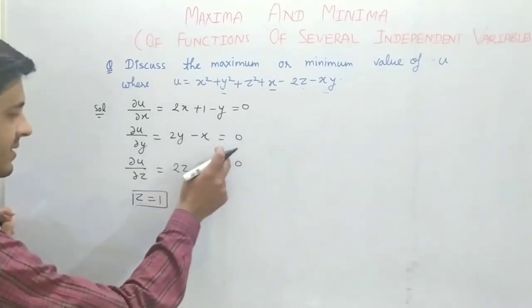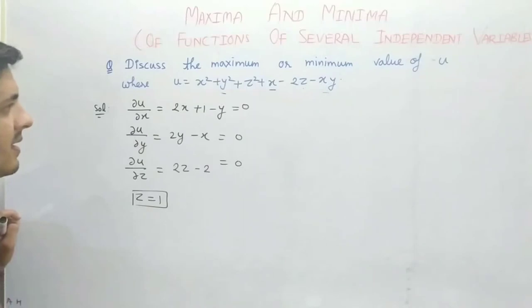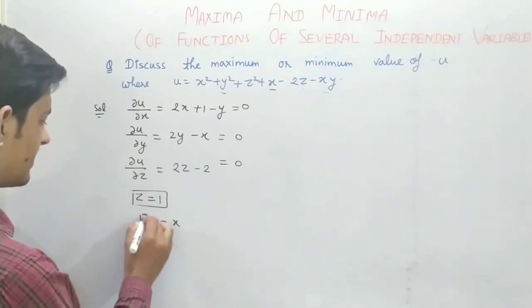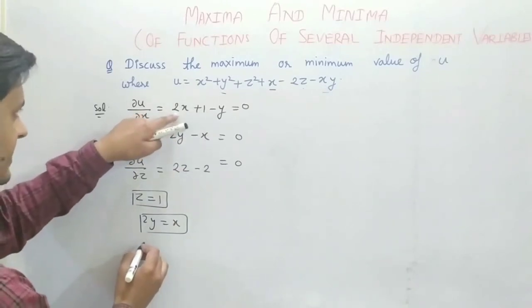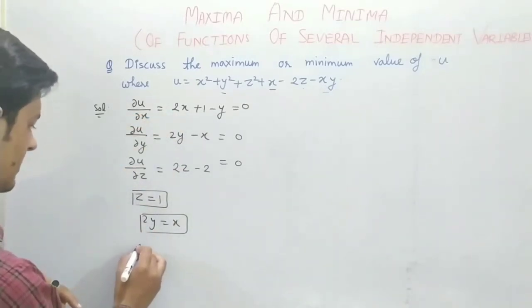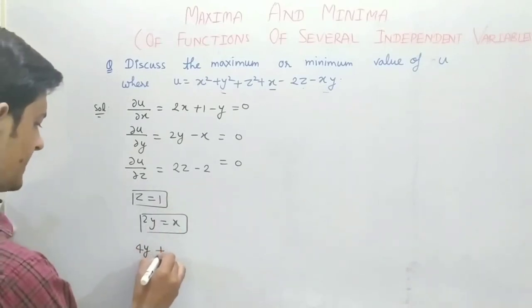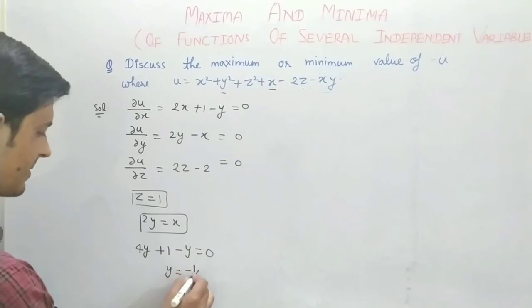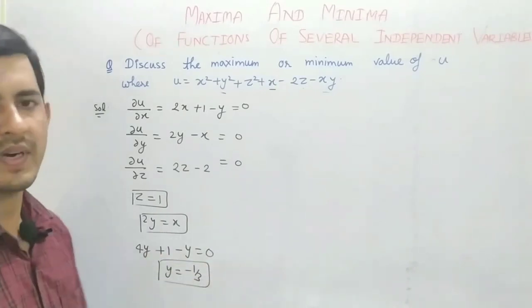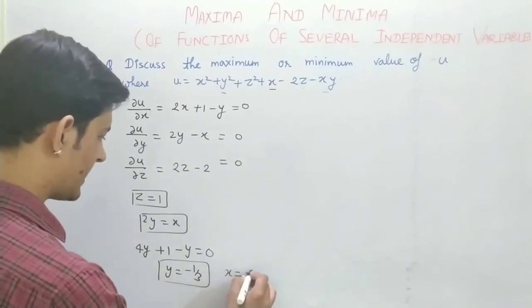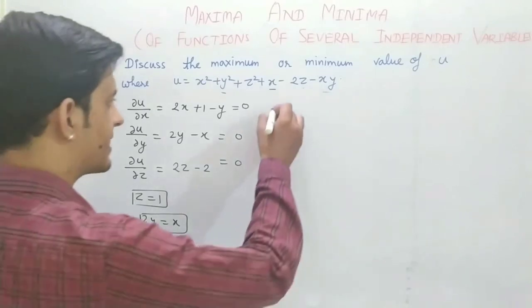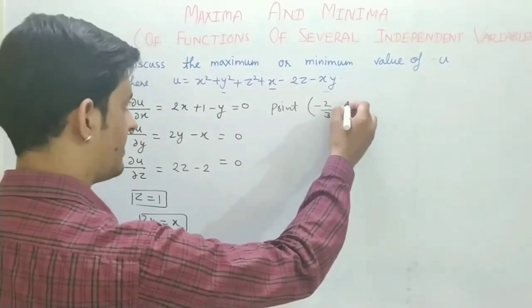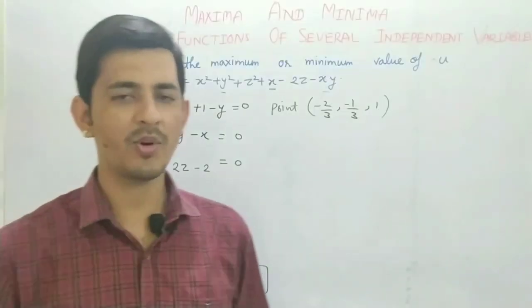I told you that to find maxima/minima values, you set all three partial derivatives equal to 0. After setting equal to 0, find the values of x, y, z. From del u / del z = 0: 2z minus 2 = 0, so z = 1. Then solving the two remaining equations simultaneously: 2y = x from one equation. Substituting into the other gives y = minus 1/3. So the stationary point is (minus 2/3, minus 1/3, 1).